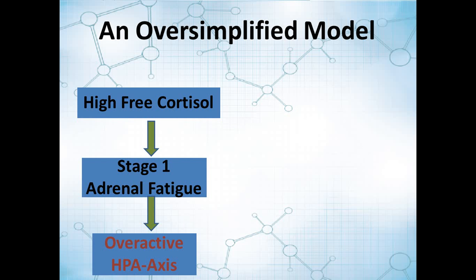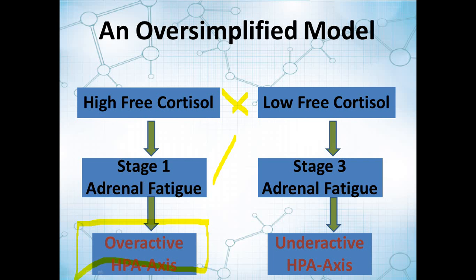Because the model that we've been using really is an oversimplified model that just says, look, if your free cortisol is high, some people call that stage one adrenal fatigue, but the overall message is you have an overactive HPA axis. And when you have a low free cortisol, some people call that stage three adrenal fatigue, you have an underactive HPA axis.